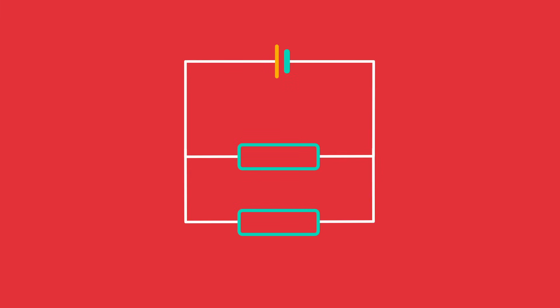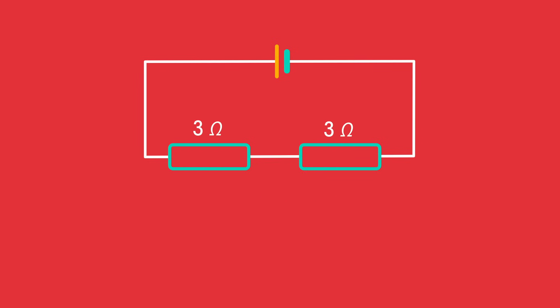When resistors are in parallel, things work out a bit different. Look at this circuit. If these two resistors were in series, then their combined value would be 3 ohms plus 3 ohms equals 6 ohms.